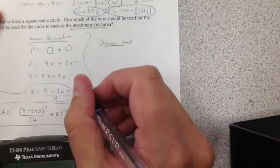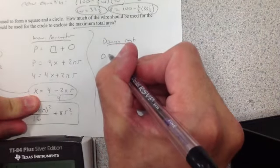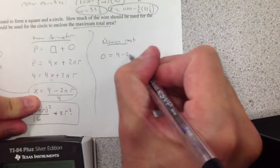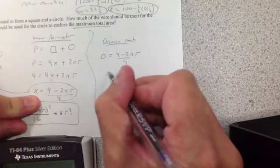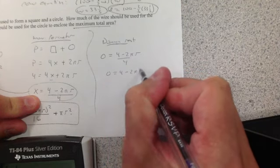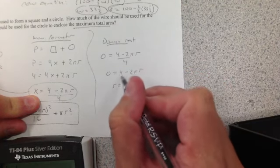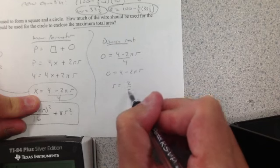We just take our function, set it equal to 0. Cross-multiply. That just becomes 0 equals 4 minus 2 pi r. Solve for r. We get, solving for r, we get 2 over pi.